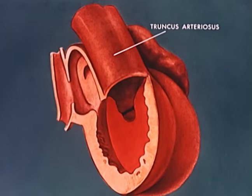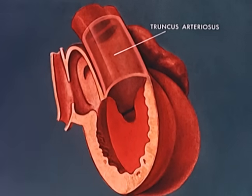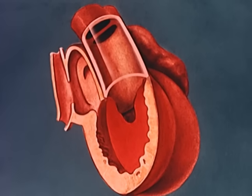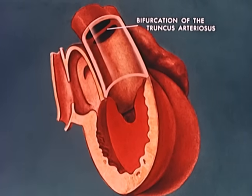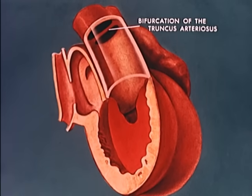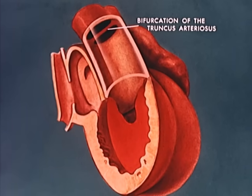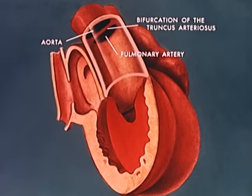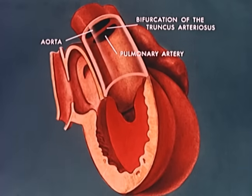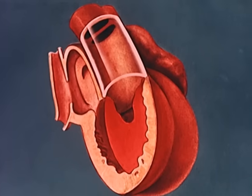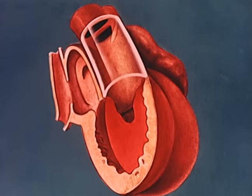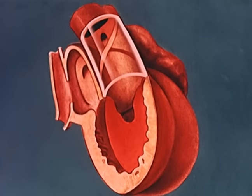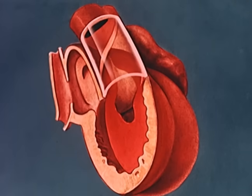The truncus arteriosus is presented schematically as a transparent cylinder. The bifurcation of the truncus arteriosus, illustrated here, represents two of the aortic arches. The fourth aortic arch forms the aorta, and the sixth is the origin of the pulmonary artery. A pair of ridges, which develop at the bifurcation, spiral down the truncus arteriosus. They fuse along the axis of the cylinder to produce a single spiral septum, extending down towards the ventricles.